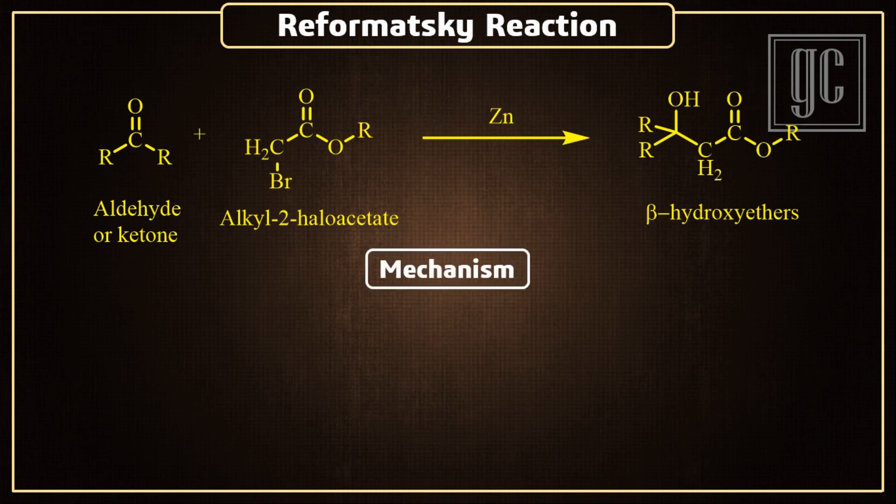Now we are going to discuss the mechanism of this reaction. The first step is the synthesis of zinc enolate. The haloacetate interacts with zinc metal. In nature, zinc metals are electron-rich metals, in the presence of fully filled d orbitals.